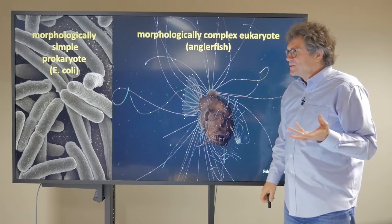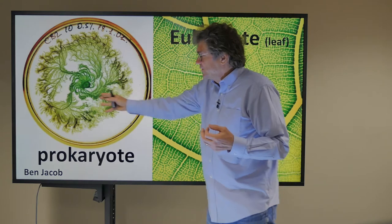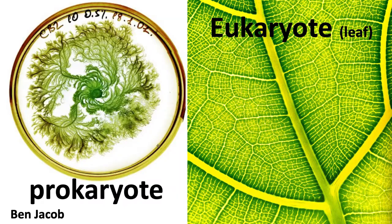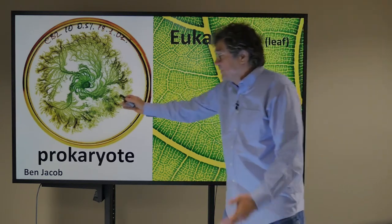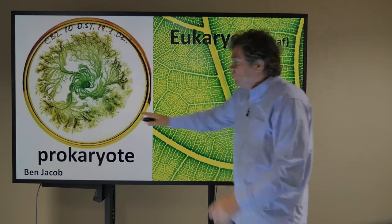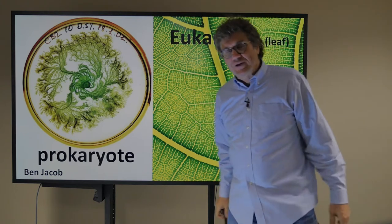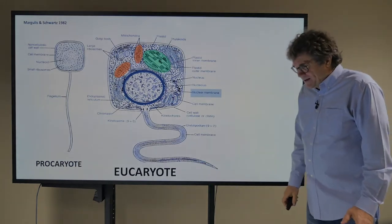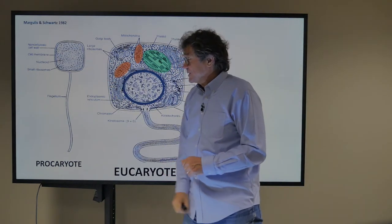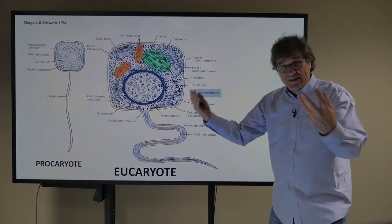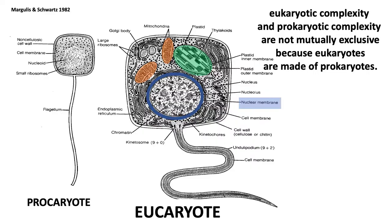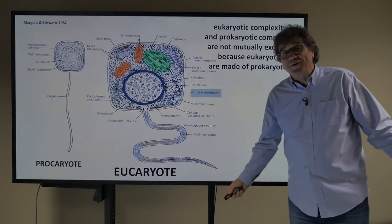But you know, there are exceptions to this, important exceptions. So here's a petri dish of prokaryotes living together, and they form all kinds of beautiful patterns here. That looks really complicated to me. And here's the morphological complexity of a tree leaf, for example. So I don't see any necessarily difference between these and these. But again, we're comparing one organism to a whole bunch of supposedly individual prokaryotic cells. Now, you will hear that prokaryotes are supposed to be simple and eukaryotes are supposed to be complicated. But I don't buy it because these eukaryotes are really just a bunch of prokaryotes that have gotten together. So we can say that eukaryotic complexity and prokaryotic complexity are not mutually exclusive, because eukaryotes are made out of prokaryotes.